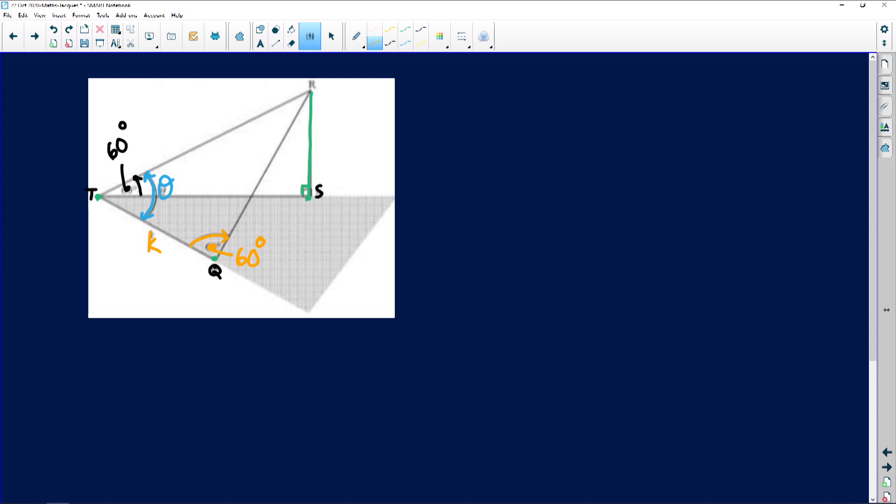They ask us to express TR in terms of theta and k. So we want TR in terms of theta and k. Now let's locate it, TR lies up there. Theta is in the oblique triangle here and k is also there, so I'm going to start in triangle TRQ.